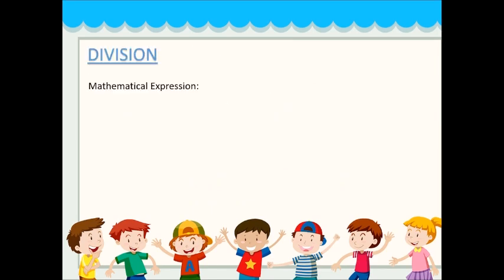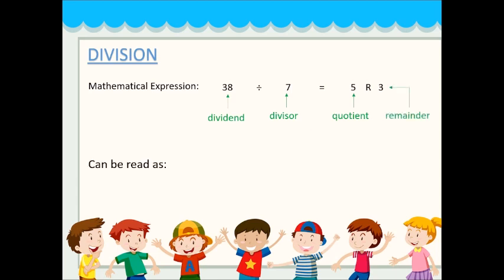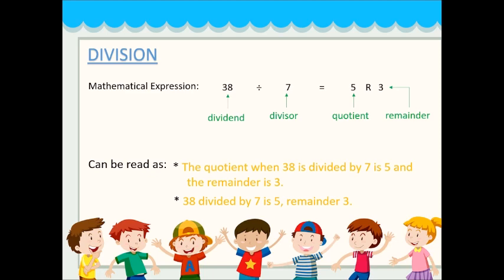Next is division. The mathematical expression is written as 38 divided by 7 is equals to 5 remainder 3. Where 38 is the dividend, 7 is the divisor, 5 is the quotient, and 3 is the remainder. This can be read as: the quotient when 38 is divided by 7 is 5 and the remainder is 3, or 38 divided by 7 is 5 remainder 3.